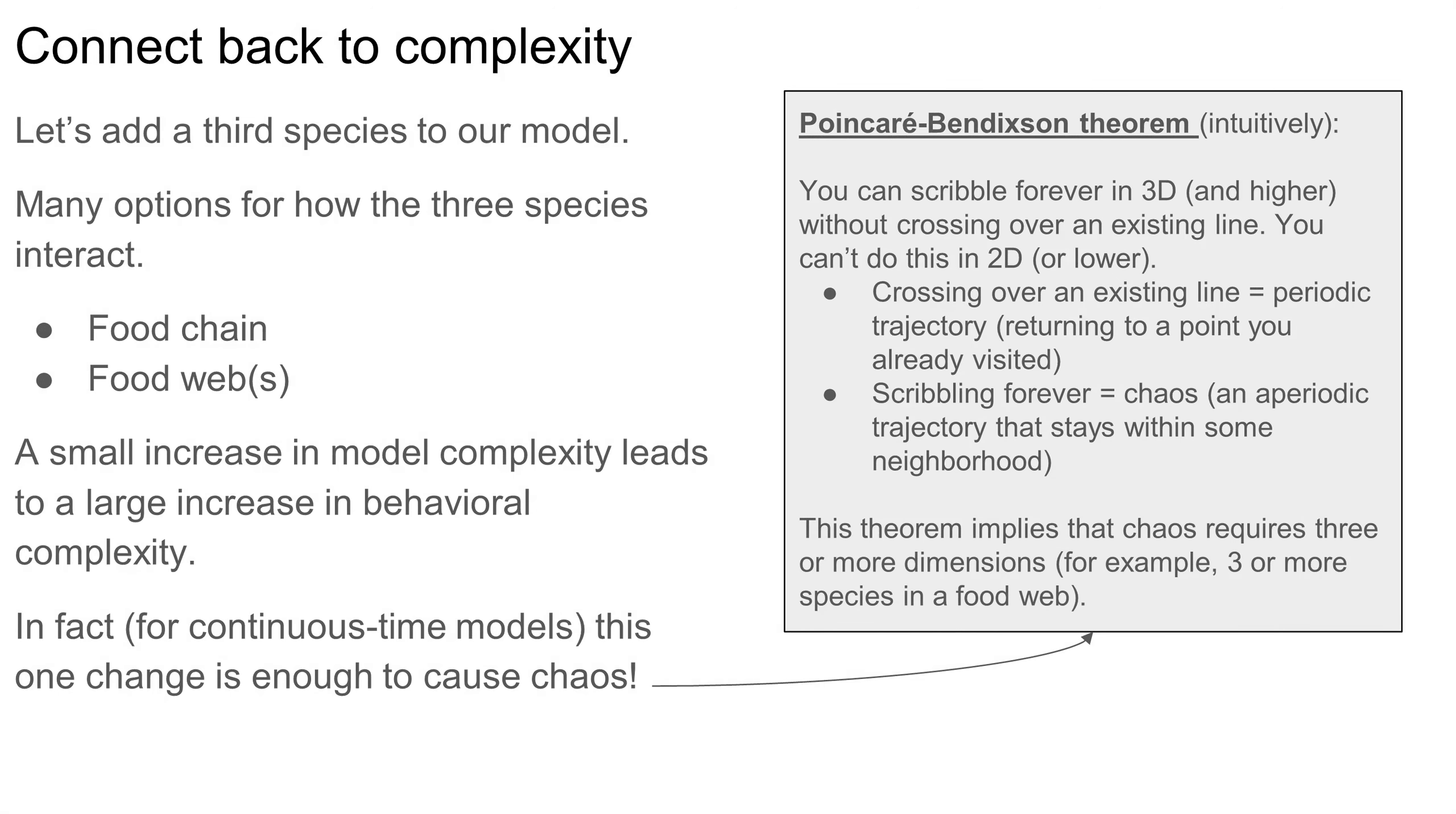So, the Poincaré-Bendixson theorem implies that in order for a system to demonstrate chaotic behavior, its phase space must have three or more dimensions. Connecting this back to our food web models, the food web has to have three or more species for chaos to arise.